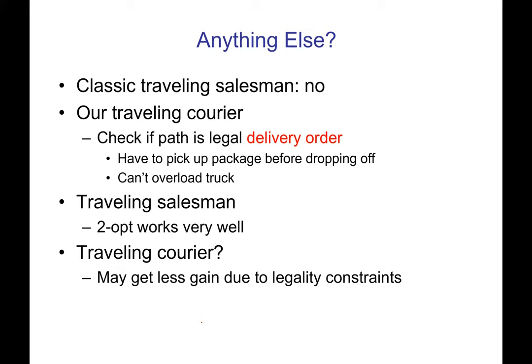Maybe that means you don't want to do two-opt and instead just swap two intersections — a pickup or a delivery. Or maybe you want to do a two-opt and then have a little re-legalizer. Maybe the main reason perturbations are being rejected is you have some drop-offs before picking up the package — you could write code to legalize that by swapping or shifting the order. There are a lot of different perturbation operators you can come up with, and some work much better than others. It's very hard to say in advance what's best, so it's good to just experiment.